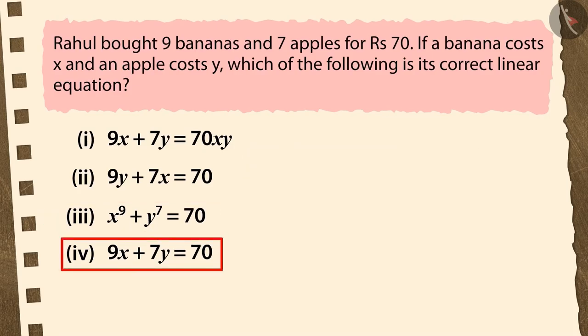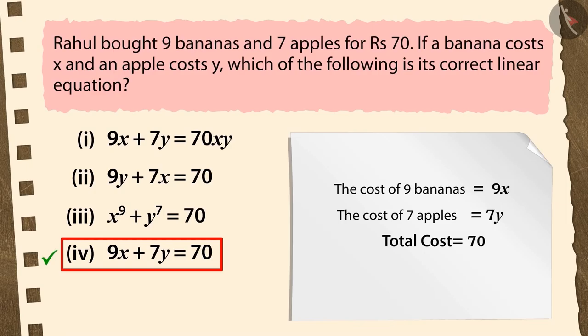If you have chosen the fourth option, that's exactly right. The price of 9 bananas will be 9 times X, that is 9X. Price of 7 apples is 7Y and 9X plus 7Y equals 70, which is the total price.